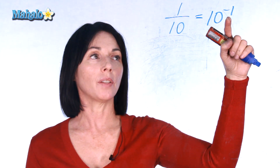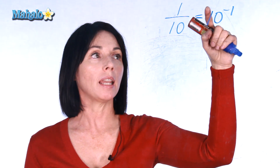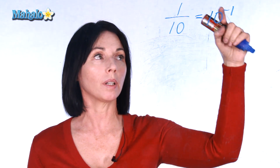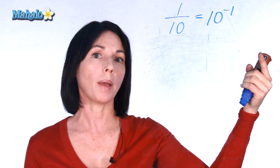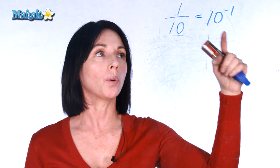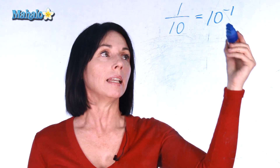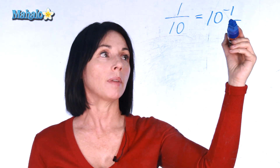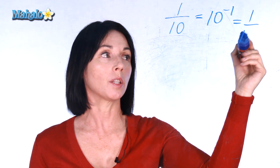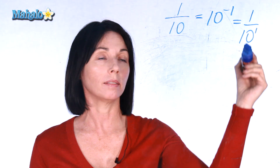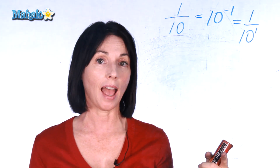Anytime you see a negative exponent, that means you take the reciprocal of the thing that's being raised to that power. So 10 to the power of negative 1 is the same as 1 over 10 to the power of 1, and 10 to the power of 1 is just 10.